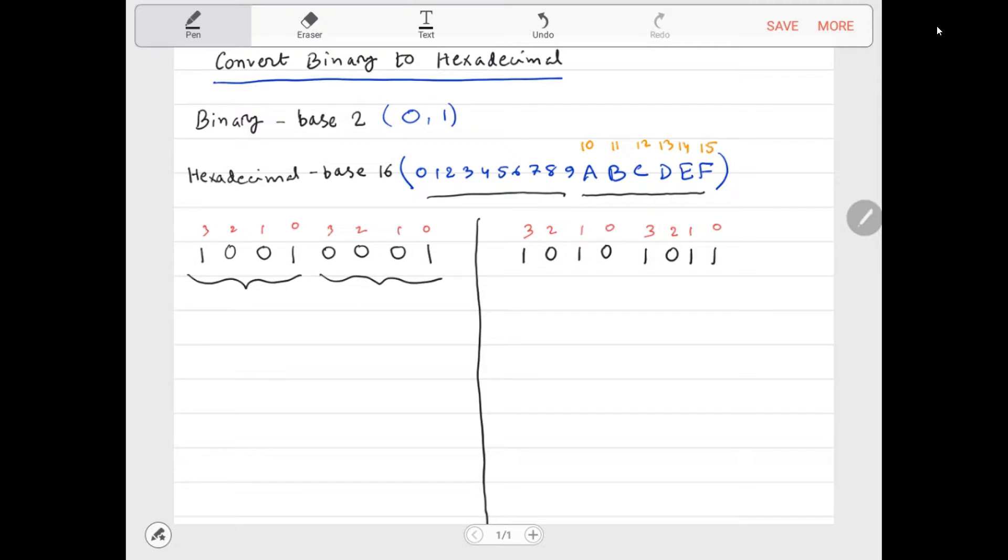This one, you'll have 2 to the power of 0 over here. You have 2 to the power of 0 plus 2 to the power of 3, so you get 8 plus 1 equals 9. On this side you have 1. So the hexadecimal notation is 0x, and you have 91.